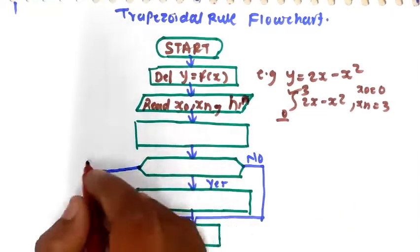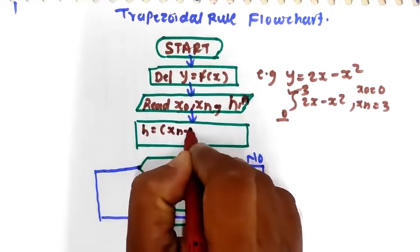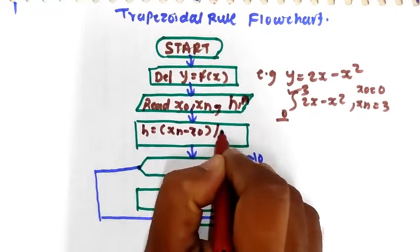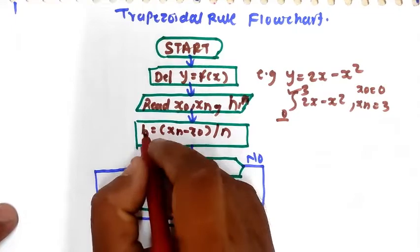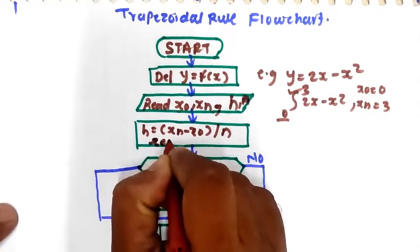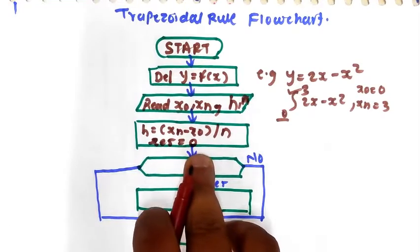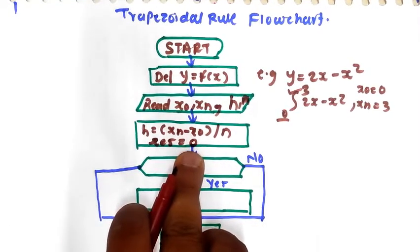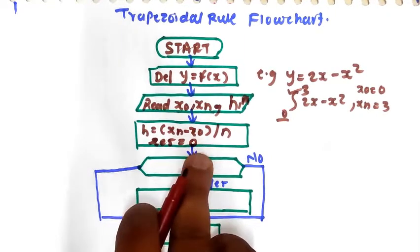Next, we have to calculate the step size h, which is equal to xn minus x0 divided by n. This is nothing but the step size. And initially, we have to set result equal to 0. So here we put result equal to 0 — that is nothing but the result. Initially, result is 0.